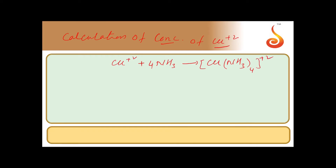The initial concentration of copper ions is 1 molar. After reaching equilibrium, we assume that X molar of copper ions remain. For ammonia, they are adding a sufficient amount such that the final concentration is 2 molar.